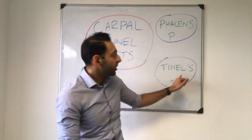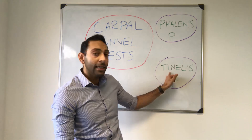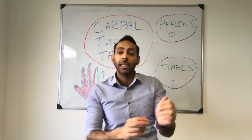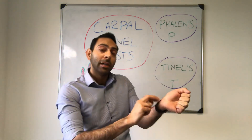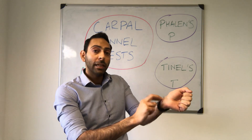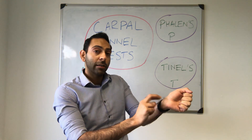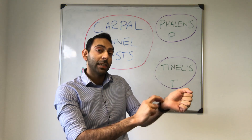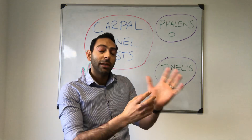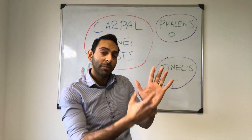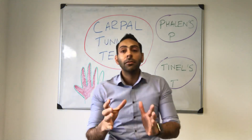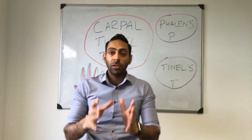Then you have Tinel's test — T, Tinel's, tap. Tinel's test is your tap test, so you tap along the area where the median nerve is going to run through the wrist, and if you tap along the nerve you may eventually recreate those symptoms again in the median nerve distribution.